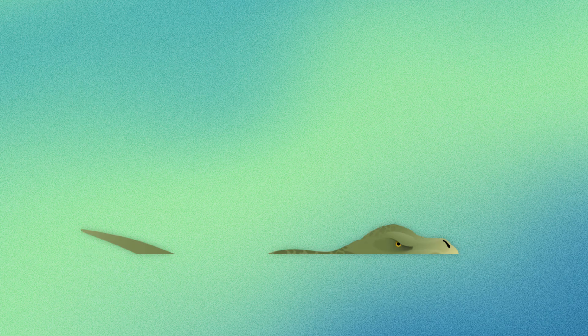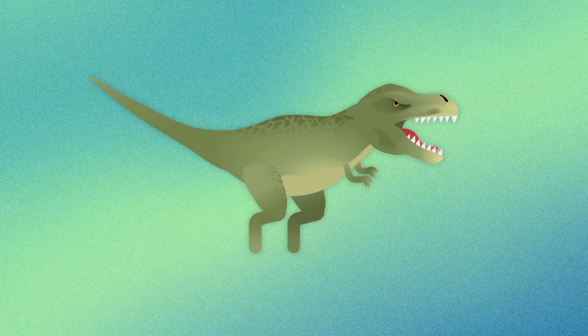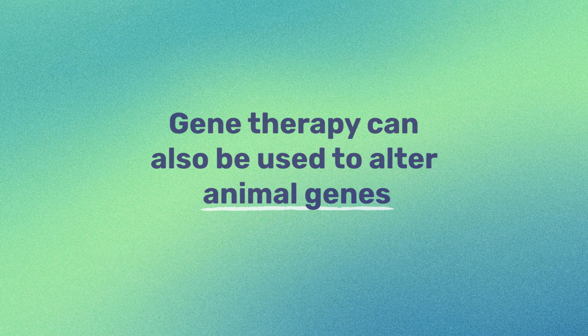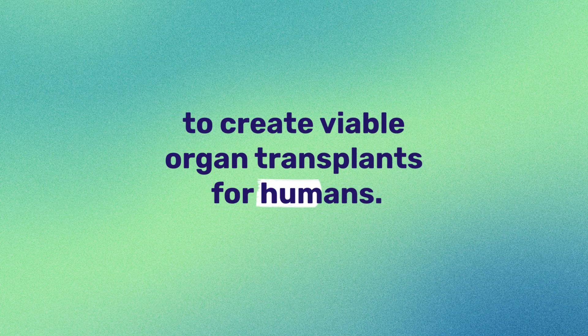Well, hold on to your butts. Because just like the fictitious act of creating dinosaurs by splicing in frog DNA, gene therapy can also be used to alter animal genes to create viable organ transplants for humans.